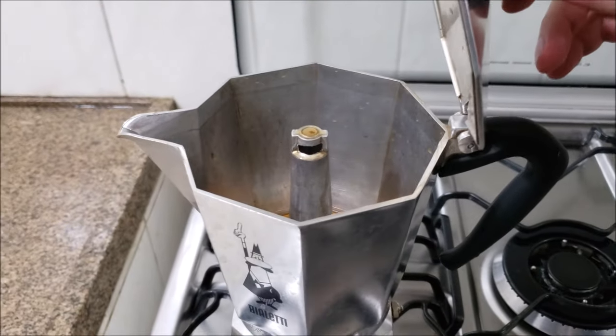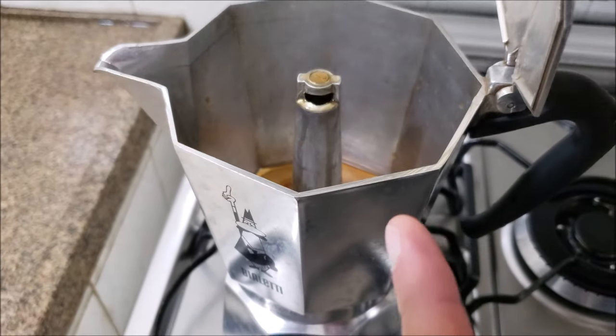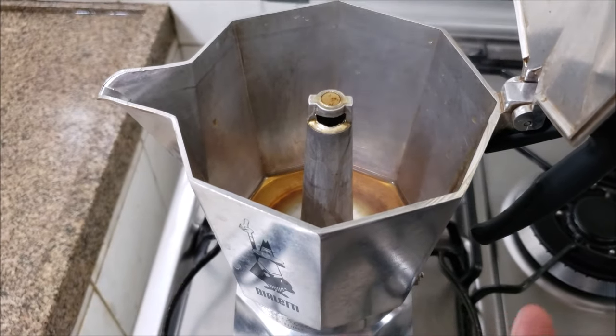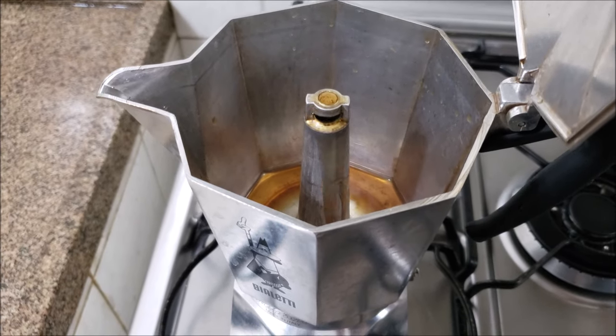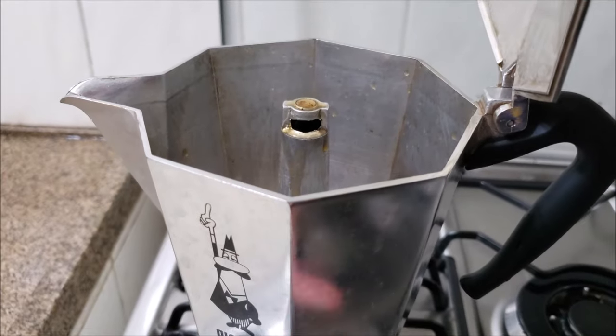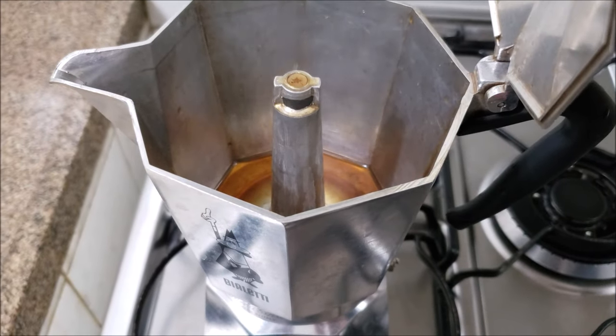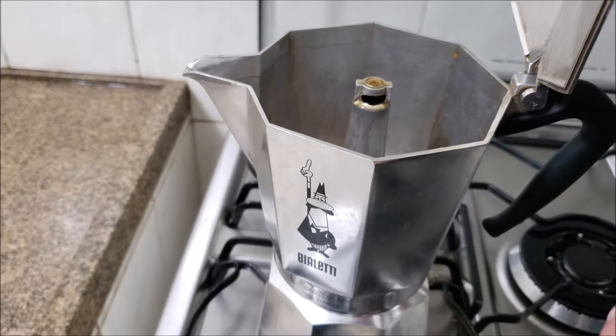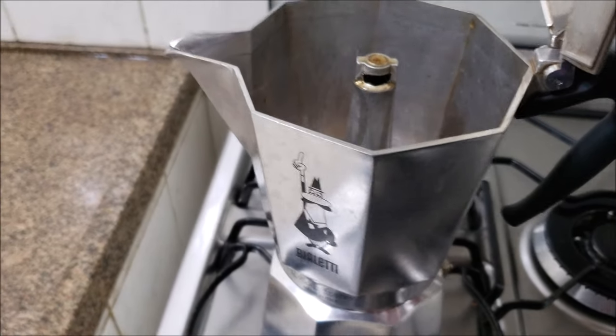Now if you see your moka pot is sputtering or spitting coffee like this, spitting water and you see steam and vapor but the coffee is not coming up, that's because there is no pressure being built in the correct form. The coffee should be flowing constantly and silently, making no noise.